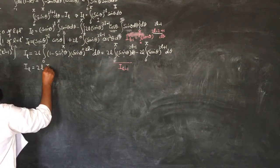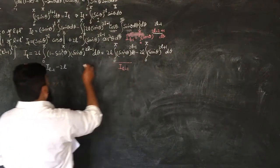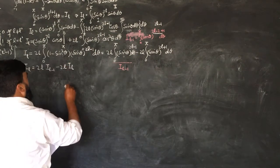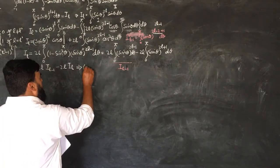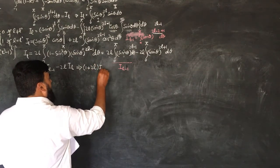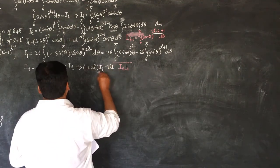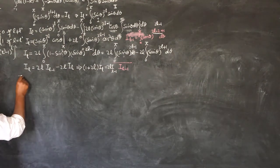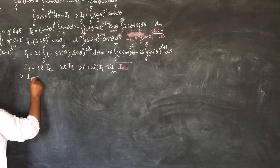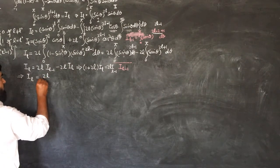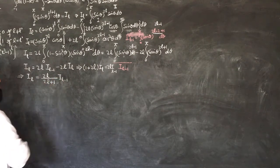So we have IL equals 2L times IL-1 minus 2L times IL. Moving 2L·IL to the left side gives (1 + 2L)·IL = 2L·IL-1. This implies that IL equals 2L divided by (2L + 1) times IL-1. So I have proved this recurrence relation.